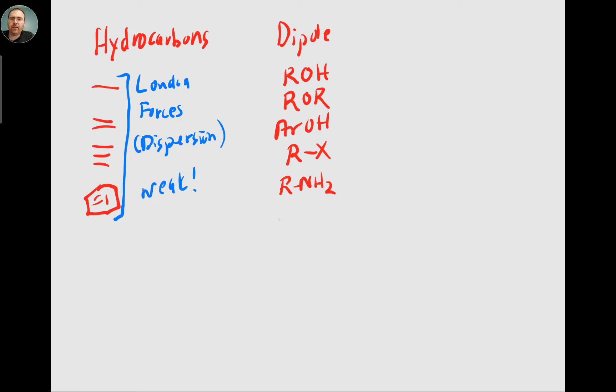Then we can look at the ones that have carbonyls just like them. So R carbonyl OH, R carbonyl OR, R carbonyl H, R carbonyl R. So this is acids, esters, aldehydes, and then ketones. And then lastly, our carbonyl NH2, which would be our amides.